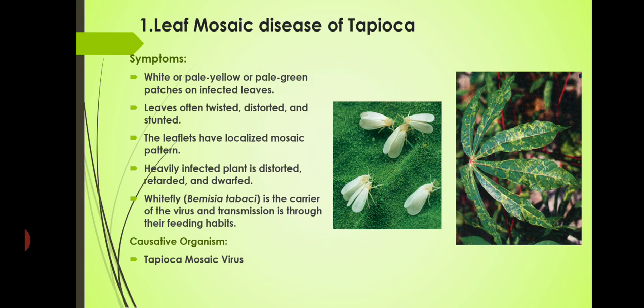From an exam point of view, you can expect four-mark questions and also two-mark and one-mark questions. One-mark questions could be: what is the causative organism of leaf mosaic disease of tapioca? For two-mark questions, what are the symptoms? For four-mark questions, you should write about the symptoms, causative organism and control measures completely for leaf mosaic disease of tapioca.